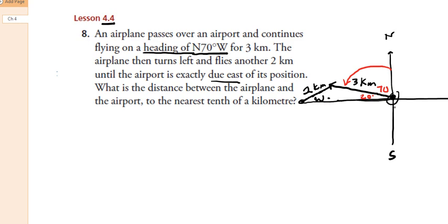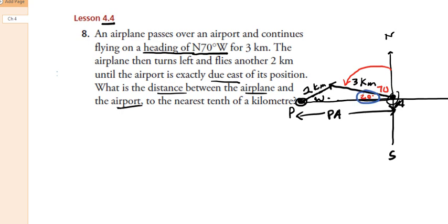So here is the airport, labeled A, and the plane P is due east. The question asks for the distance between the airplane and the airport to the nearest tenth of a kilometer — we're looking for PA. Getting the diagram set up is half the problem. Make sure you sketch it out and fill in all values you can determine, like this 20 degrees — it wasn't given, but we can figure it out right away.